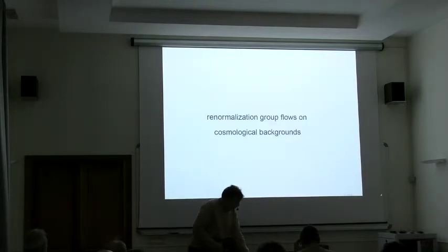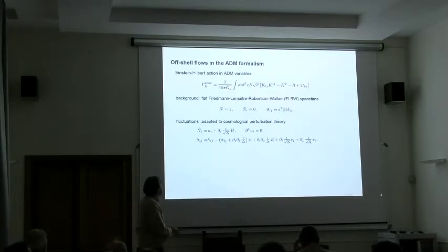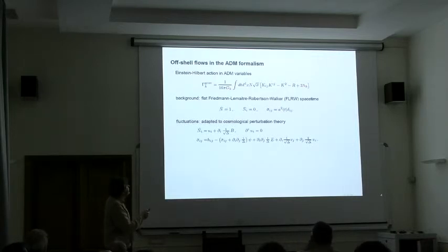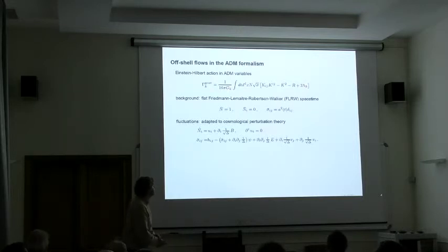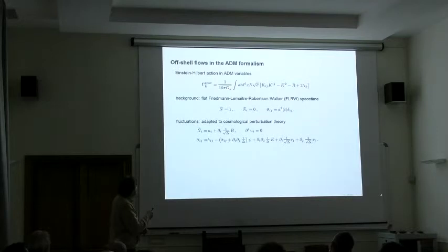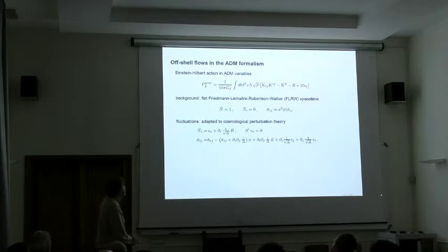Let's evaluate this on a cosmological background. The ansatz that we had before is, again, Einstein-Hilbert, now written in the ADM variables. Then, there's the extrinsic and intrinsic curvature appearing here. We choose our background to be a cosmic background of Friedman, Lemaitre, Robertson, Walker type. This is given here. We parameterize our fluctuations around this background in the standard way used in cosmic perturbation theory.